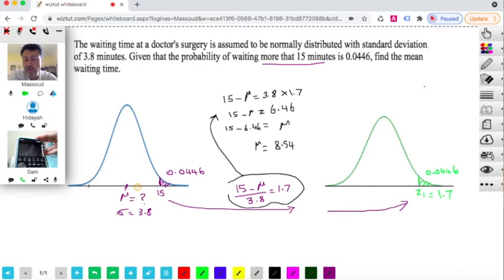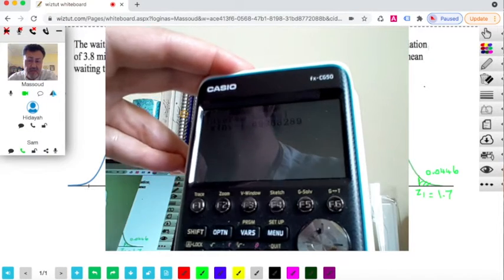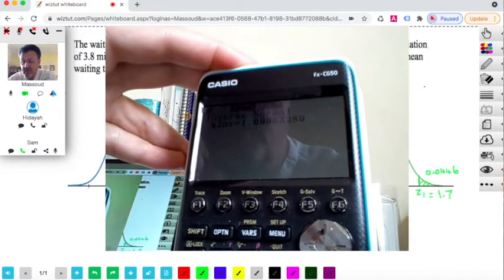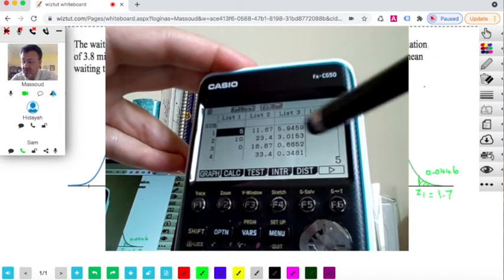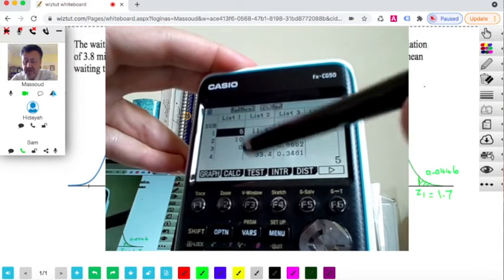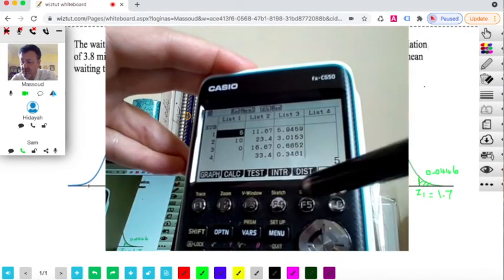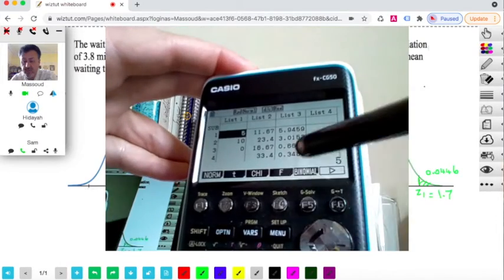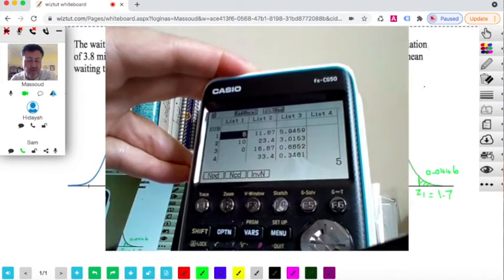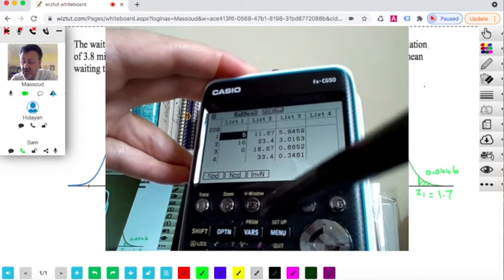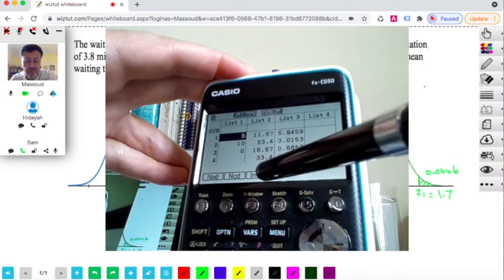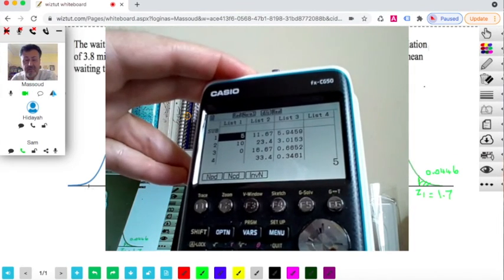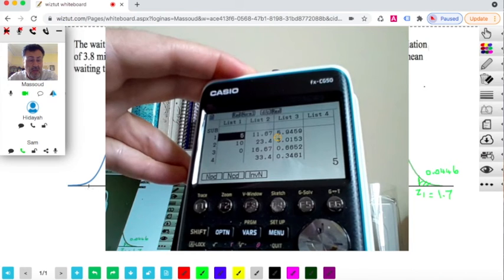I'll do another question later on. And I hope you could see the calculator well enough. So it's basically in these calculations, we would be always using the distribution. And so once you choose the distribution, we would be going to normal. But depending on the type of question, if you have the area, then you would use the inverse to come back and get the Z value. I'll see you in the next video.